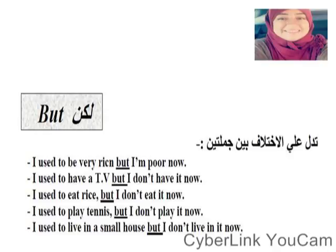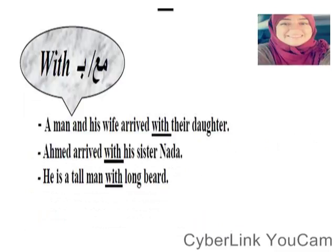The word 'but' — لكن — is used to show contrast between two sentences, meaning there is a contradiction between them. For example: I used to be very rich but I am poor now — كنت غني في فترة لكن دلوقتي أنا فقير. I used to have a TV but I don't have it now. As for 'with' — مع أو بـ. For example: A man and his wife arrived with their daughter. Ahmed arrived with his sister Nada.